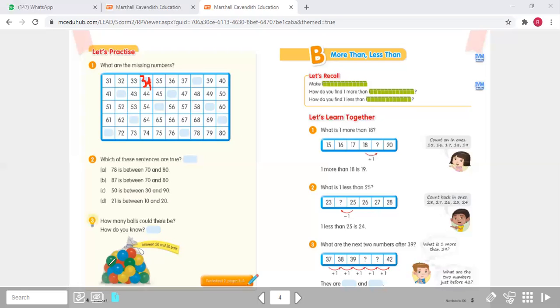And for question number three, you just need to estimate how many balls are here. Hanya diperkirakan, kira-kira ini ada berapa bola. You don't need to count, but you have to see the clue. The clue is between 20 and 30. So the number of the balls here is between 20 and 30. So you have to write down the numbers that are between 20 and 30, only one number. Hanya satu angka saja, between 20 and 30. That is the first part on page four, and we move to the next part.